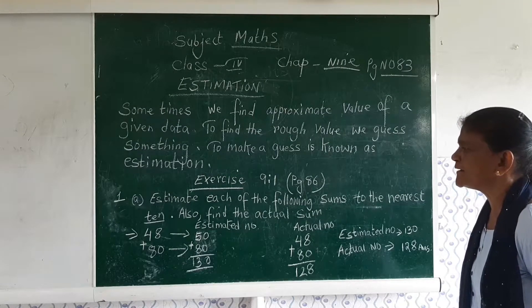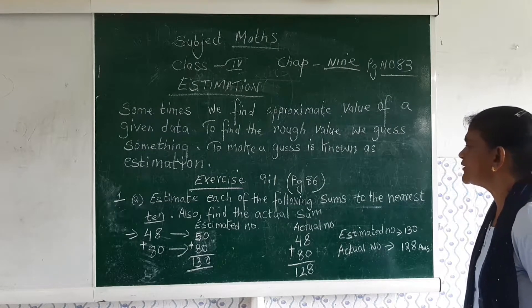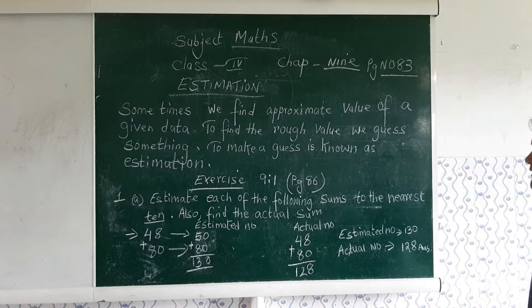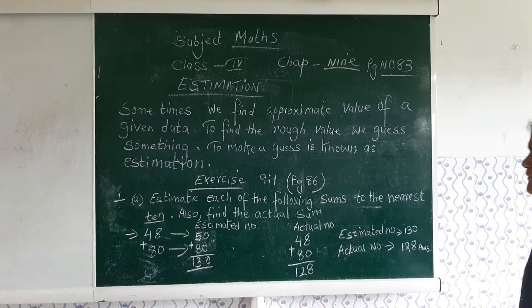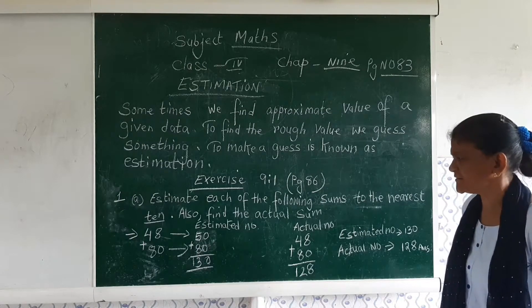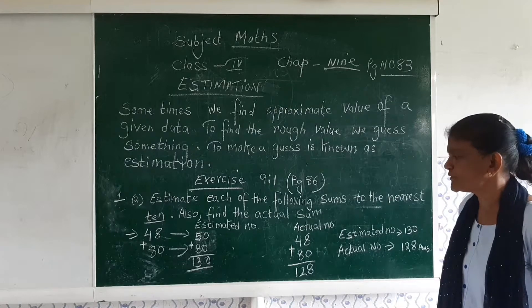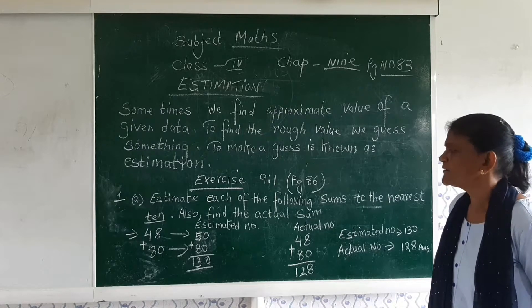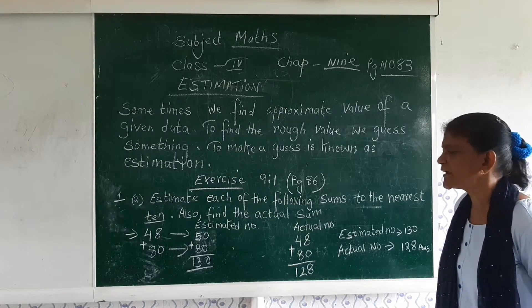Let us see sum number 1a. Estimate each of the following sums to the nearest 10. Also find the actual sum. The number here is 48 plus 80. We have to round it to the tens. The 8, we cannot write 8.